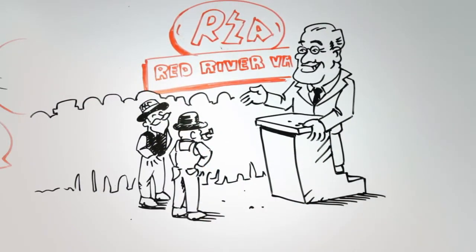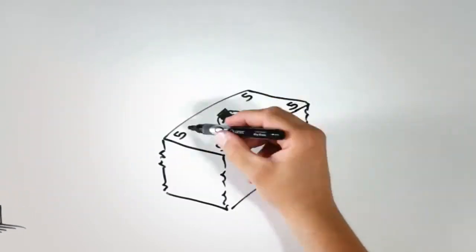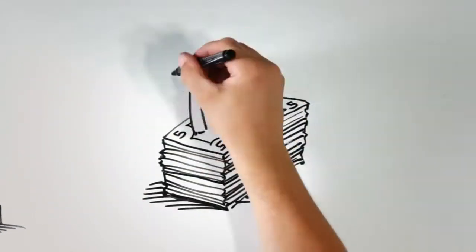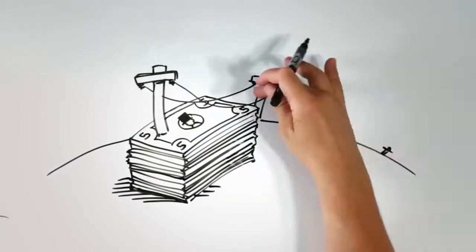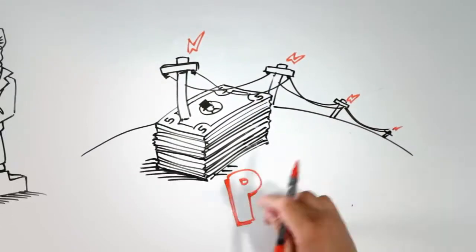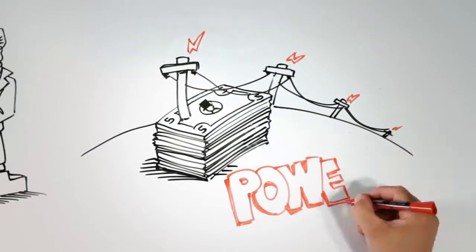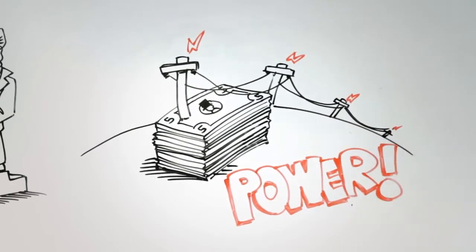And they did. Rural men and women quickly began scraping together the five dollars needed for membership and equity in the co-op. Up went the poles and wire and lines to bring rural folks what they so desperately needed: power.